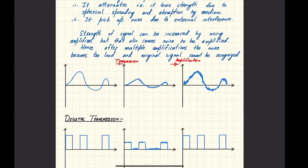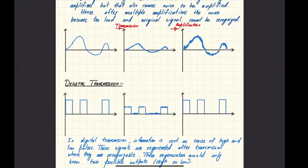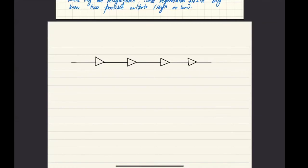But as the amplifier amplifies the signal, it would amplify the noise as well. So the noise, which is unwanted power, would also keep on amplifying. Any transmission system is made up of a series of transmission channels and amplifiers. A signal is transmitted over long distances, loses power, an amplifier boosts it, and then it's transmitted again, followed by another amplifier — a series of transmission channel and amplifier.